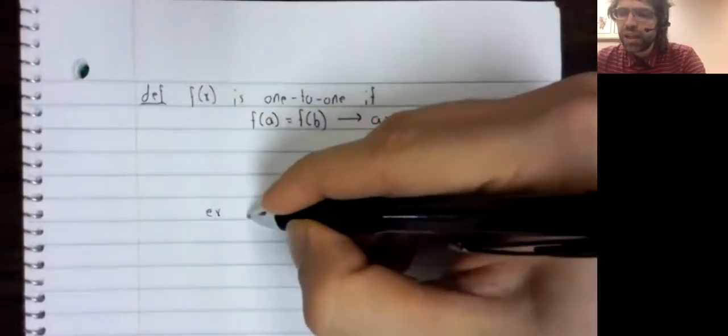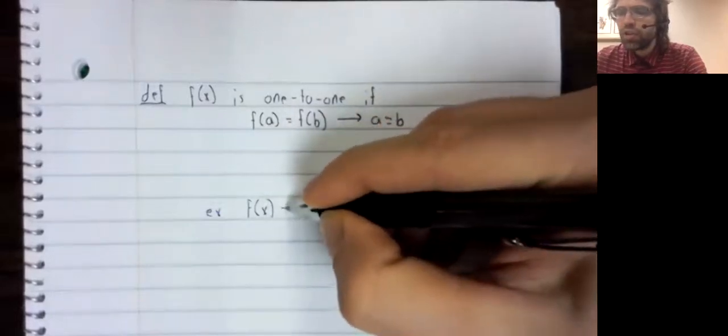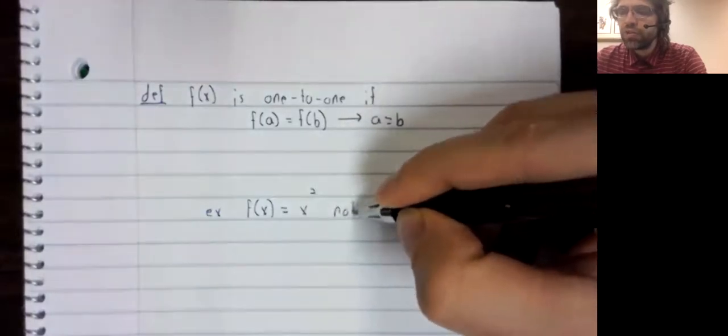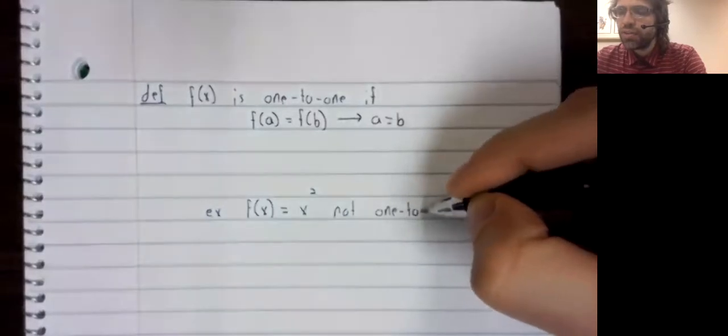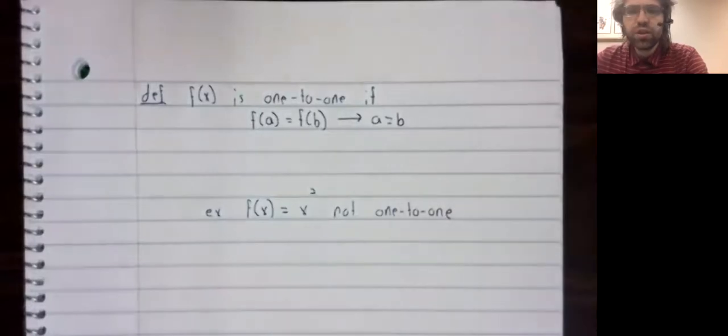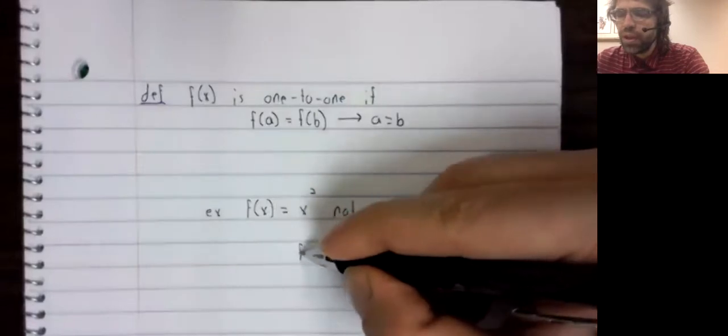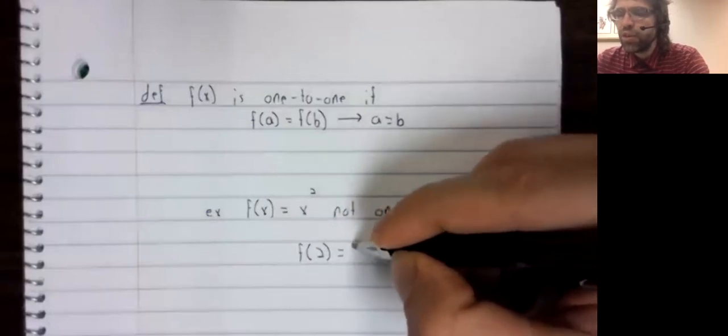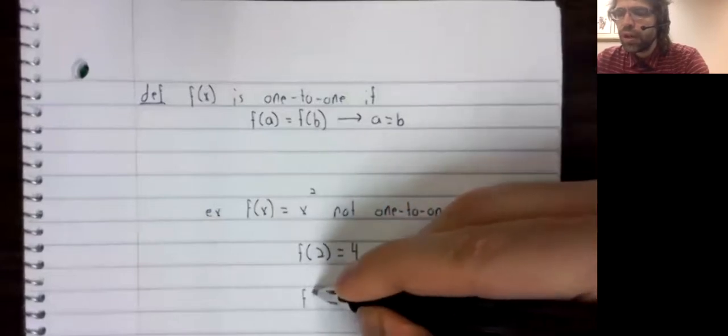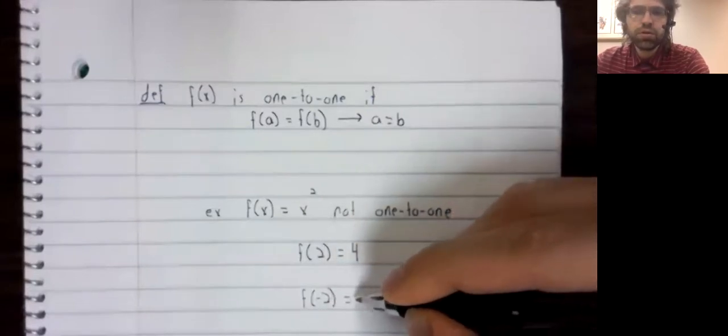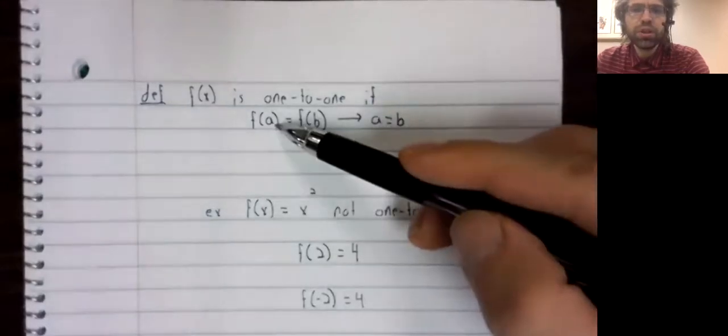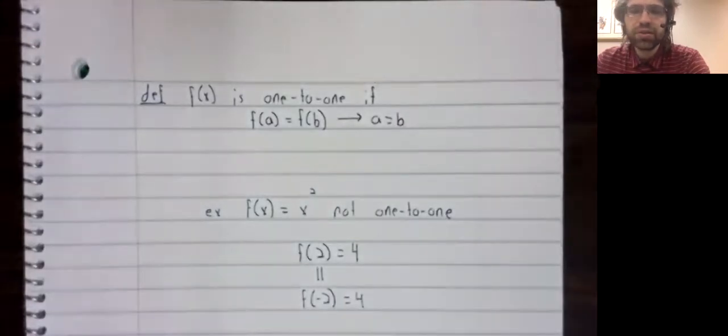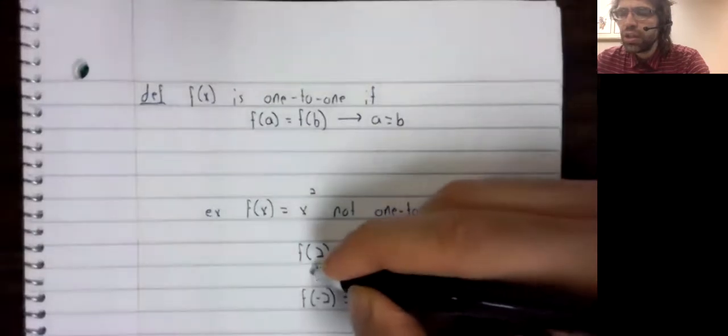So as an example of a function that is not one to one, well, we just saw such an example. F of x equals x squared is not one to one. Because, for example, f of two equals four and f of negative two also equals four. So these outputs are the same. To be one to one, these inputs would have to be the same, which they are clearly not.